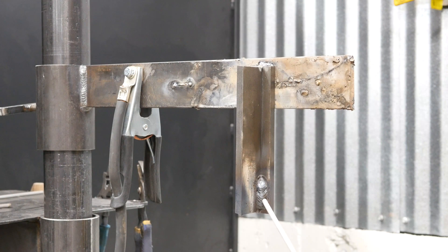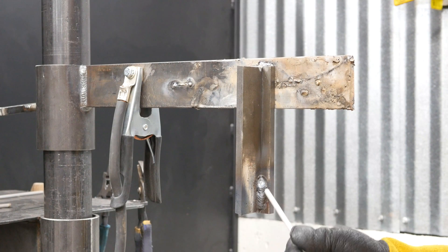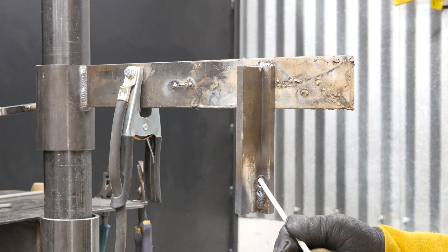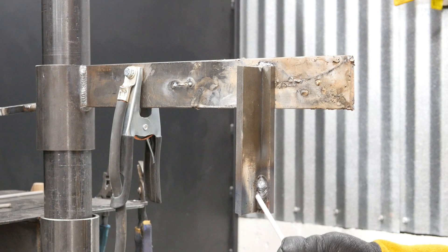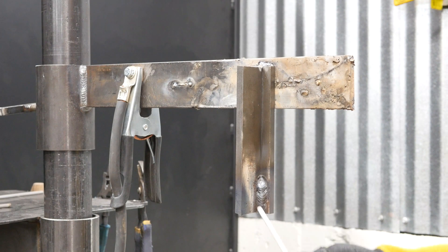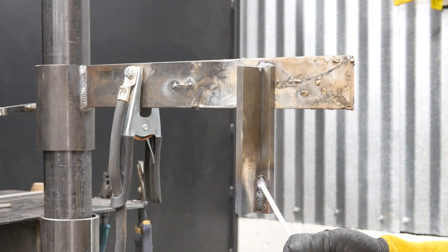This was at amperage too high. I was at 120 amps. The puddle was basically out of control. You can really see it wanting to slide down and overcome that slag shelf that was trying to hold it in place.